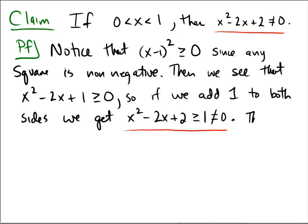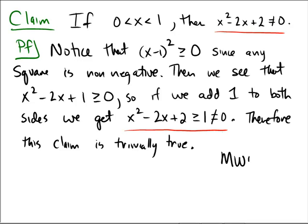Therefore, since the consequent is simply always true, this claim is trivially true. It's trivially true because the consequent was always true under any interpretation. And that completes the proof.